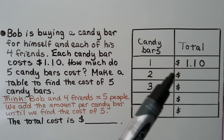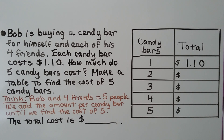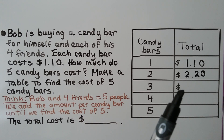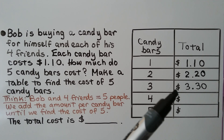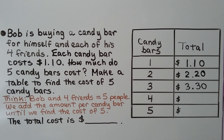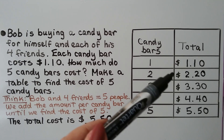If one candy bar is $1.10, can you use mental math to figure out what two would be? If you said $2.20, you're right. So what would the cost of three candy bars be? That would be $3.30. Now we add $1.10 again — if you said $4.40, you're right. So how much would it be for five candy bars? The total cost would be $5.50. We increased each line by $1.10.